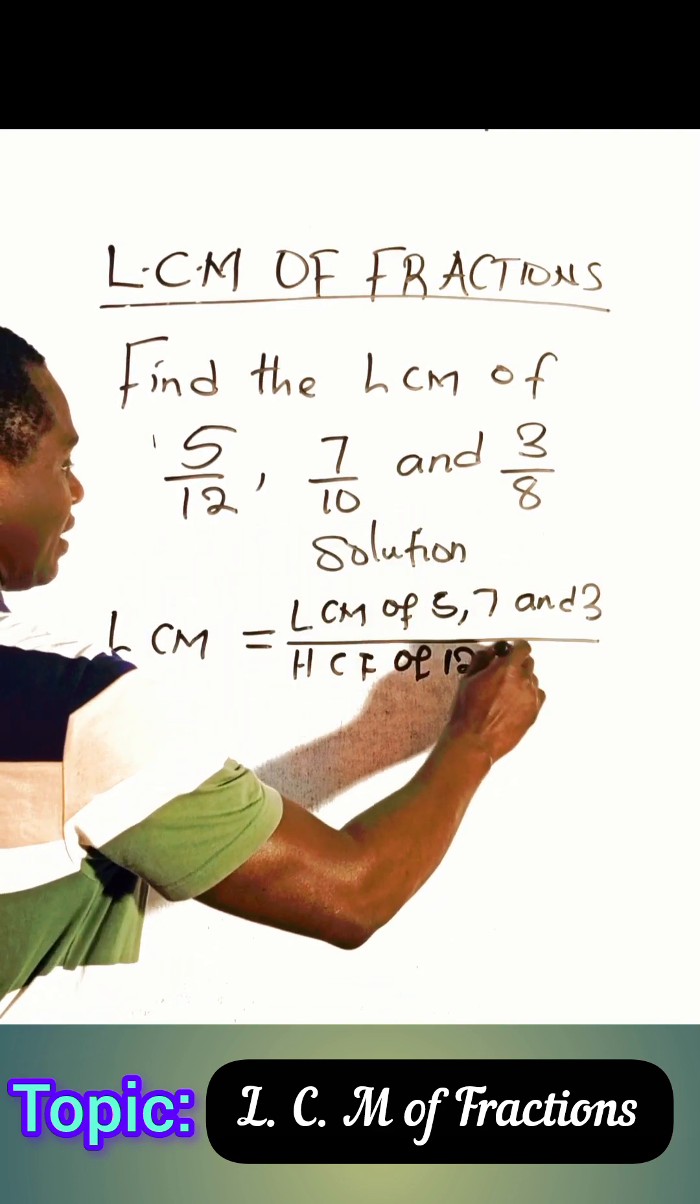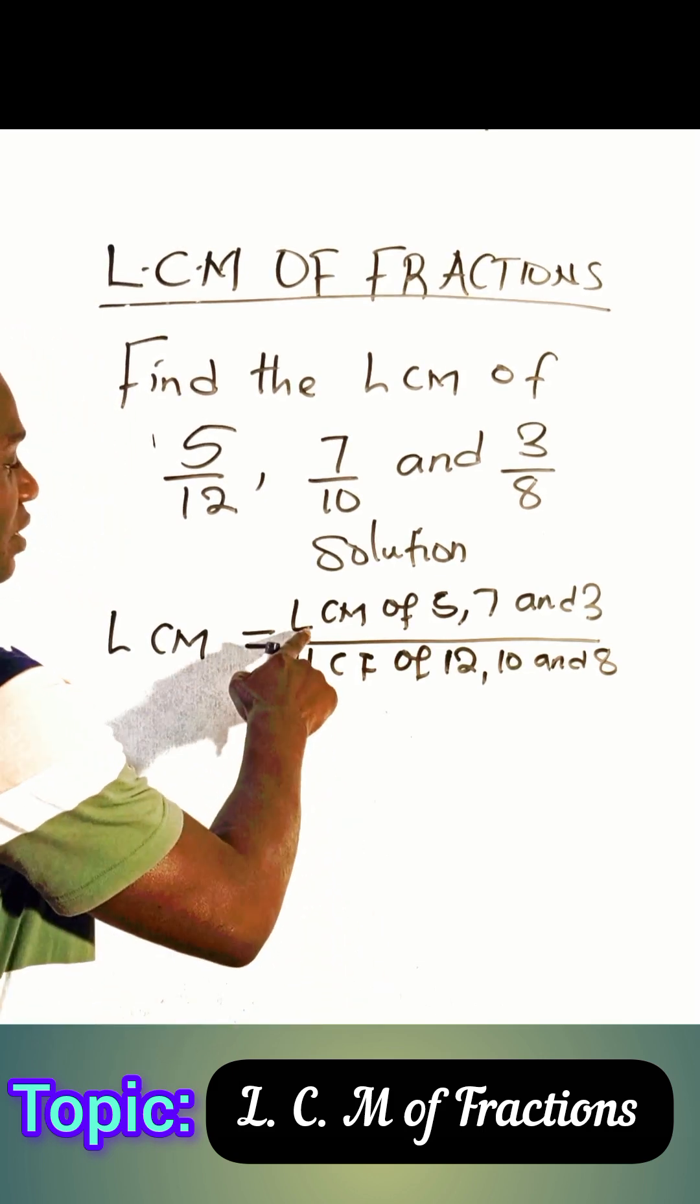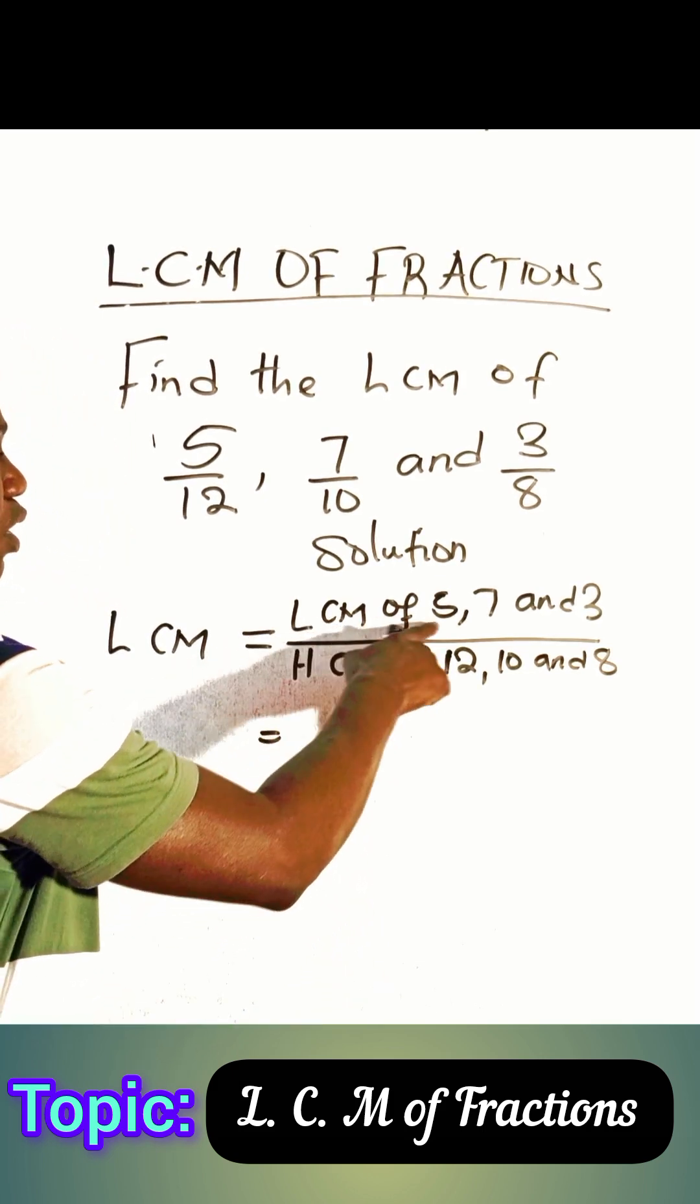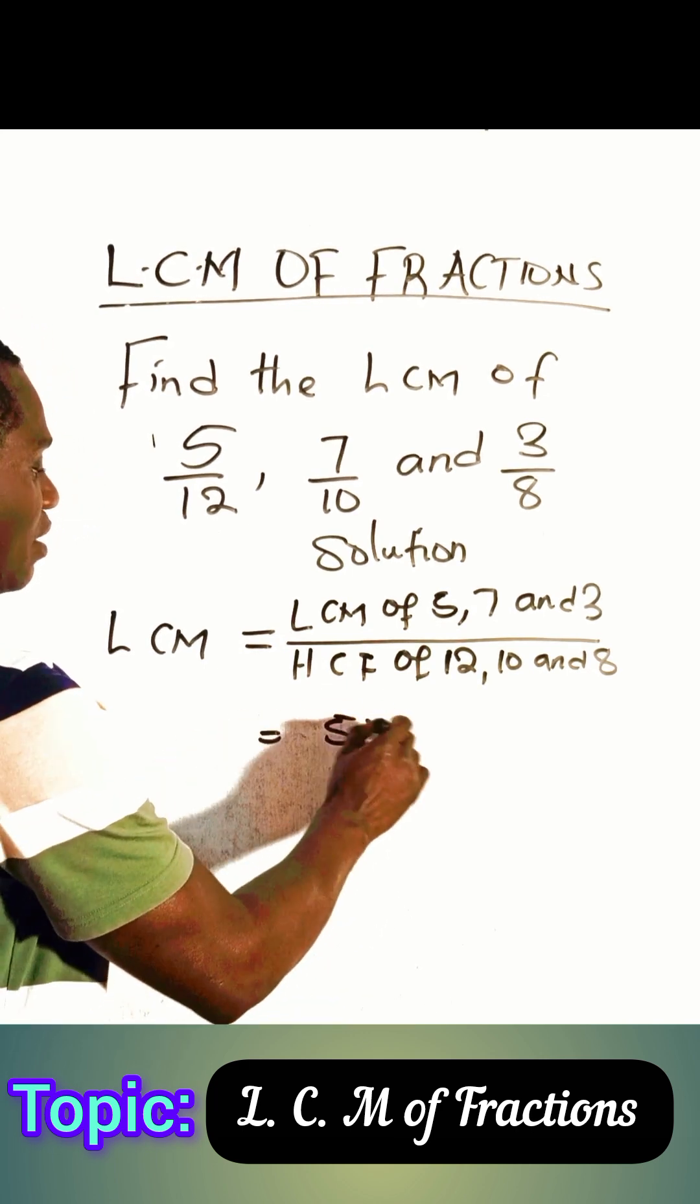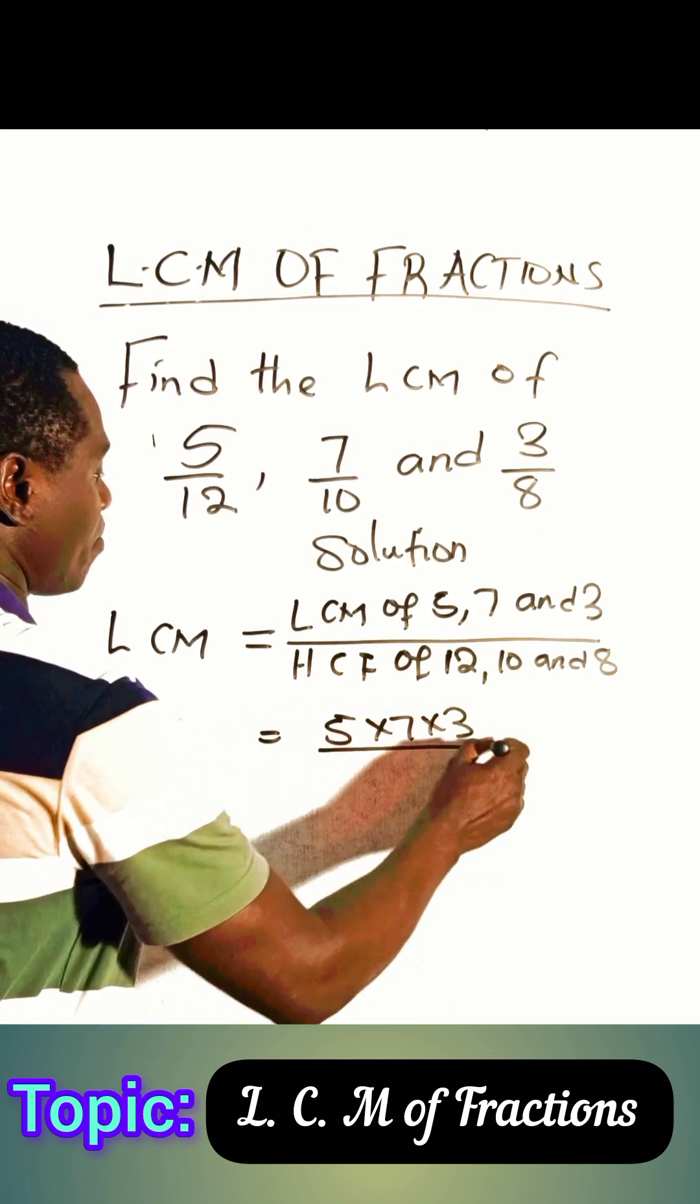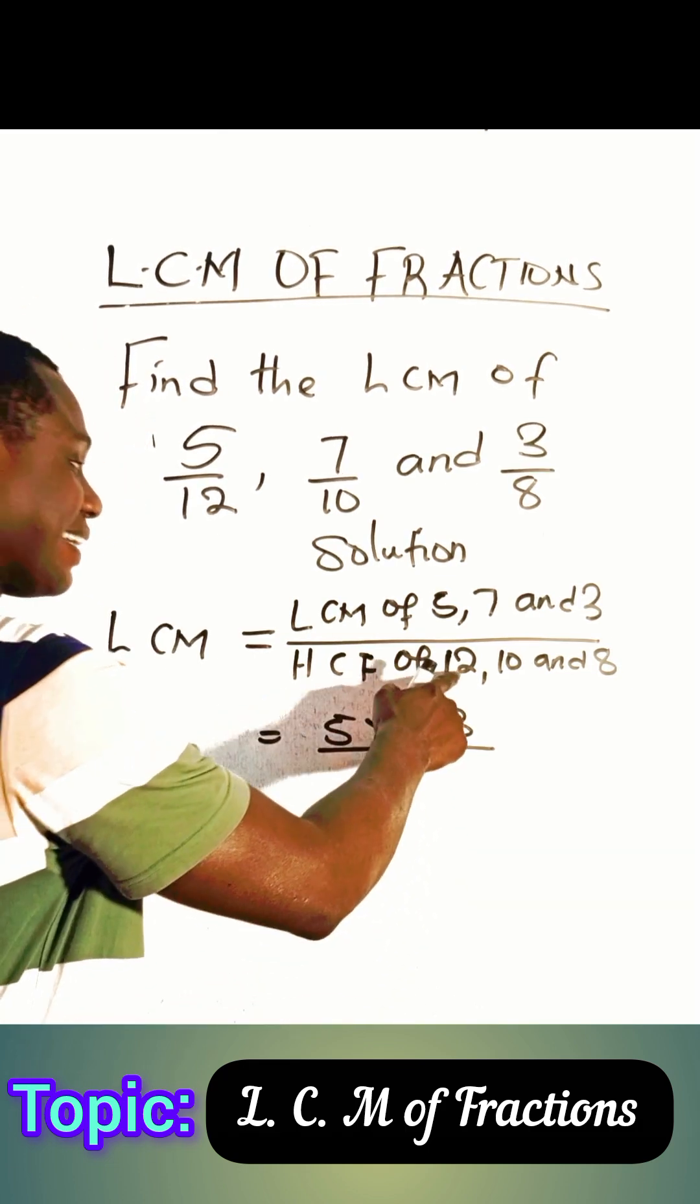Right. Now what is the lowest common multiple of these three numbers? They are prime numbers, so we can easily multiply them to find the LCM. But for the highest common factor, the greatest number that can divide 12, 10, and 8 without remainder is 2, and of course if you multiply...